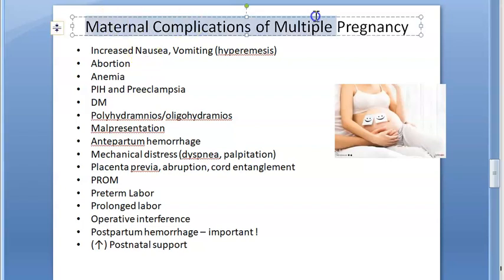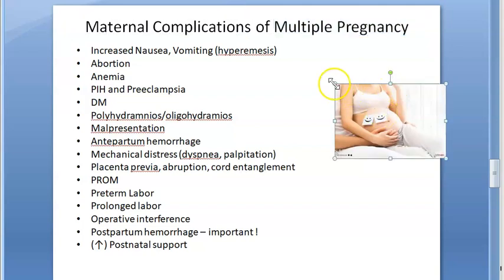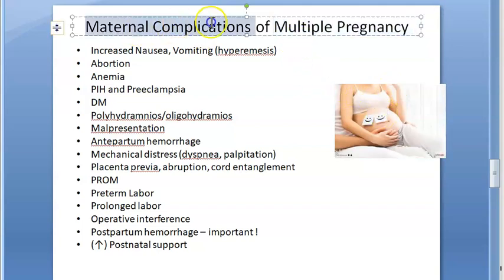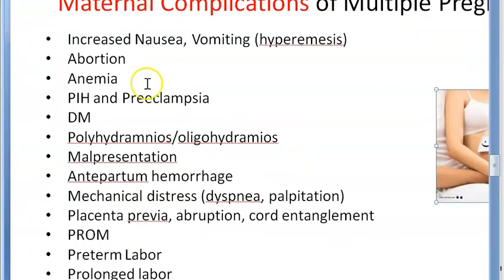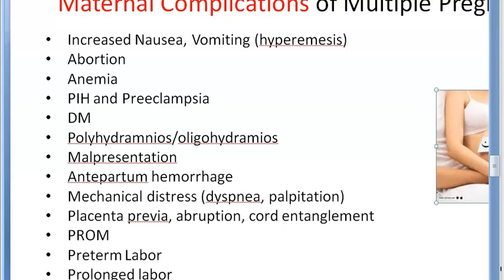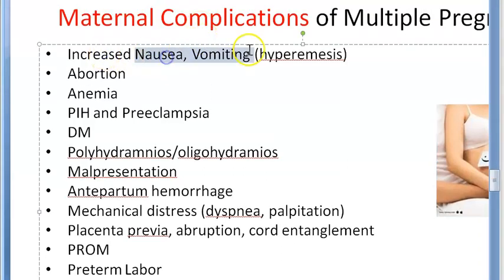In this video we want to look at the maternal complications due to multiple pregnancy — that is when she's carrying twins, triplets, or more. The complications for the mother include increased nausea and vomiting, that is hyperemesis. She can also have more chances of abortion and can have anemia.